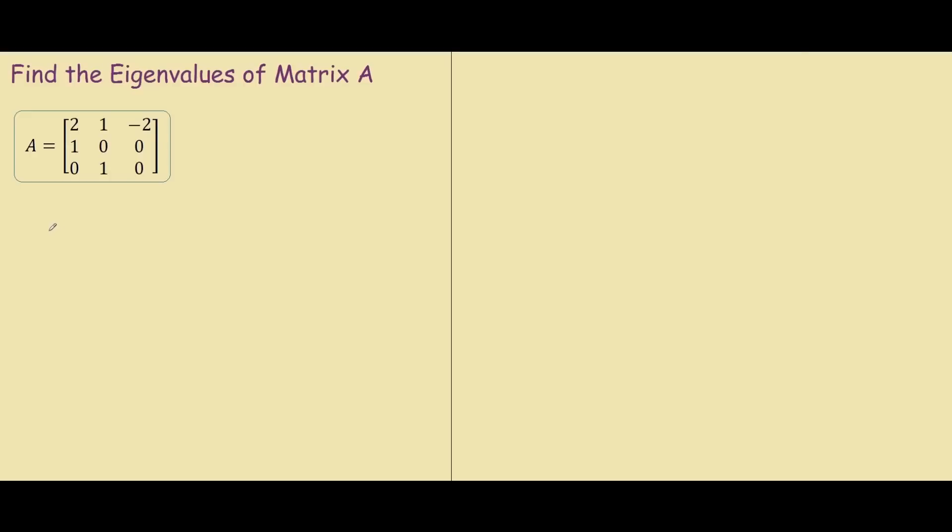Hey guys, so in this video we will be finding the eigenvalues of matrix A. The step is relatively simple. What we have to do is find the determinant of A minus lambda I, where I is the identity matrix.